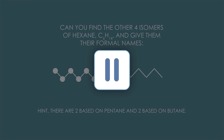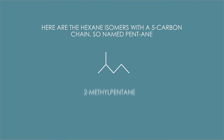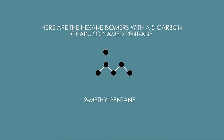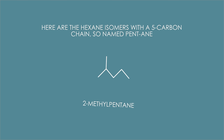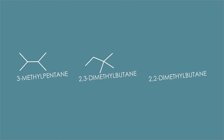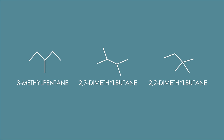Here are the hexane isomers with a five-carbon chain, so they are named as pentane. 2-methylpentane — two because the methyl group is on the second carbon atom in the pentane chain. Count the atoms: six carbons, 14 hydrogens — it's still hexane.